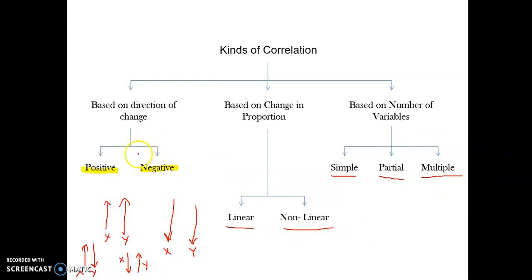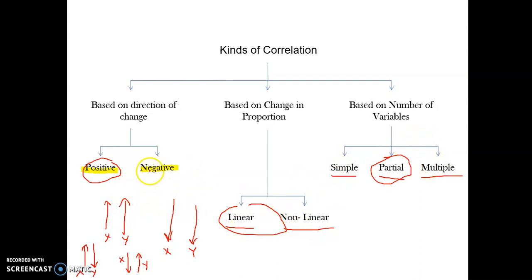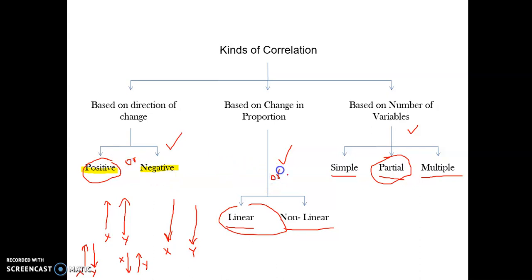A correlation can hold one property from each category — it can be positive or negative, AND linear or non-linear, AND simple, partial, or multiple. For example, a correlation can be negative, linear, and partial, or positive, non-linear, and multiple. So when analyzing a correlation, you decide its direction, its proportionality, and the number of variables involved.